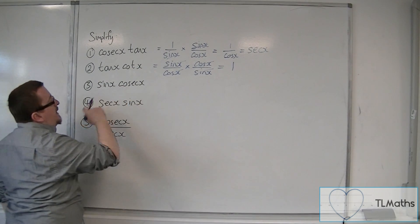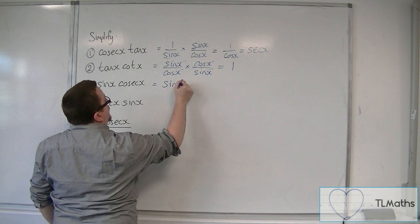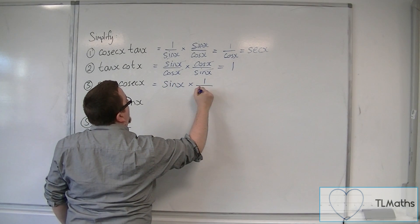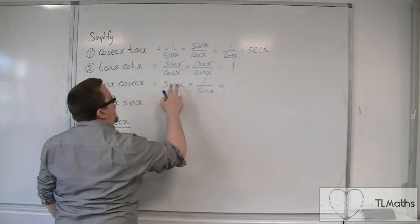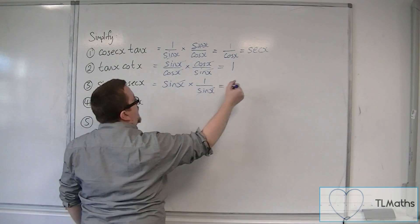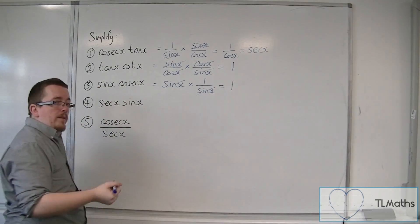Well, sine x cosec x. Well, we have sine x times 1 over sine x. So this sine will cancel with that sine, and you're just going to get left with 1.